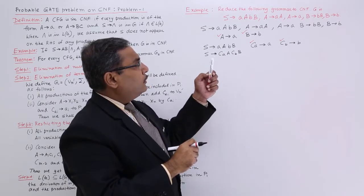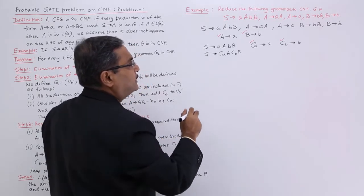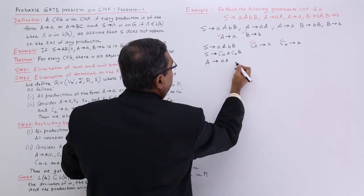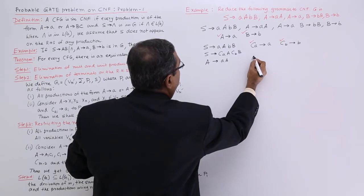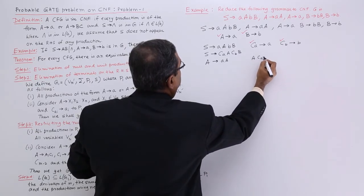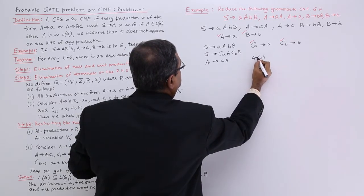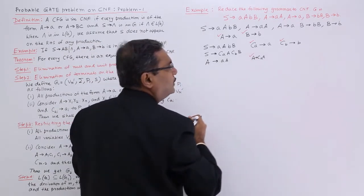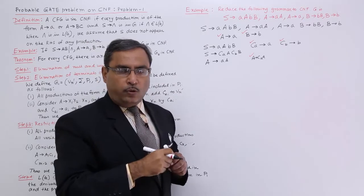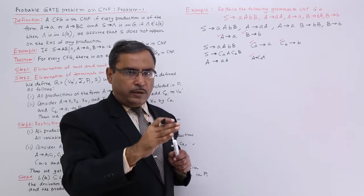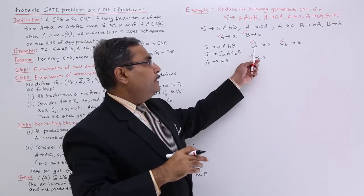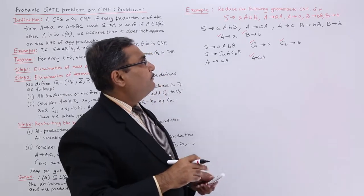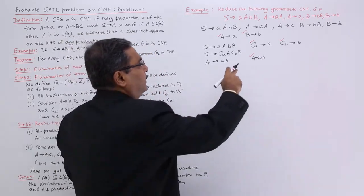Next, we are going for A produces AA. A produces AA can be written as A produces CAA, and it is also in accordance with Chomsky's normal form. Why? Non-terminal produces non-terminal non-terminal. Already you have written CA produces A, so it will also be in the Chomsky normal form in the final grammar.